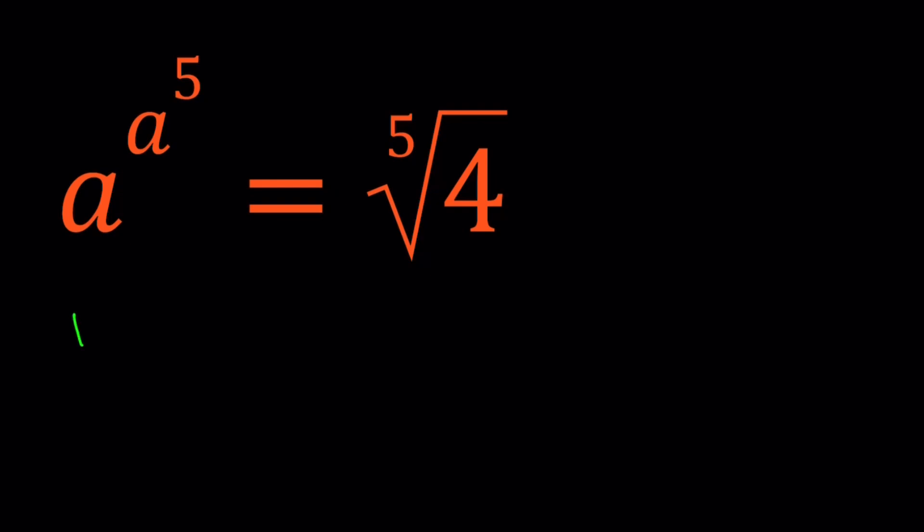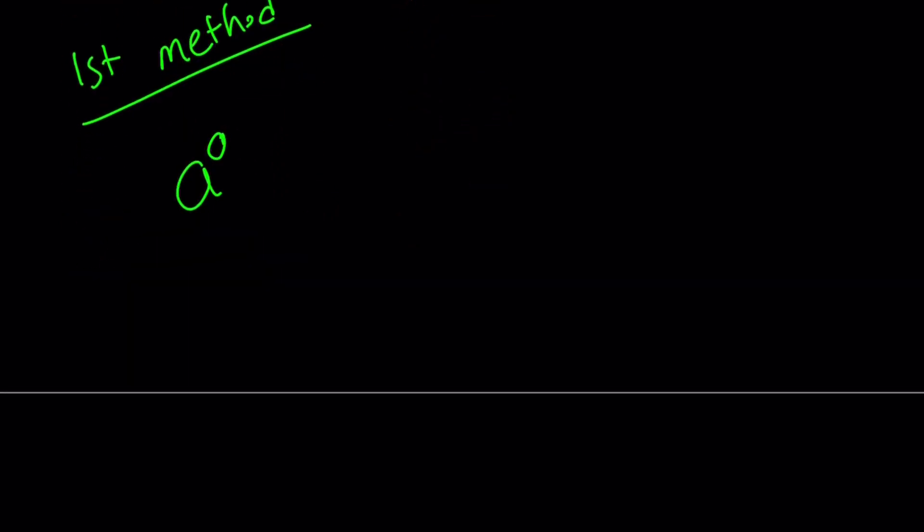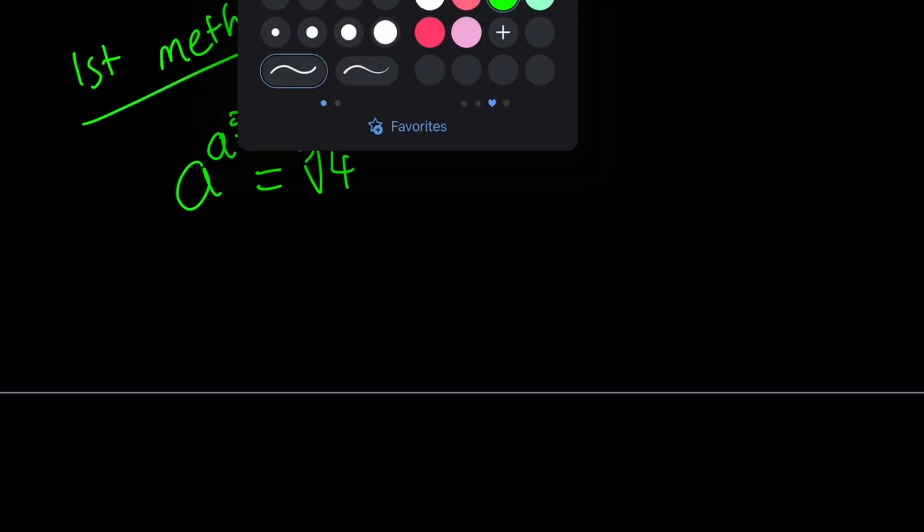Let's start with the first method. For my first method, I'm going to use substitution. Let me rewrite the problem. a^(a^5) = ⁵√4, and here's what I'm going to do. I'm going to call a^5 something. How about calling that b?